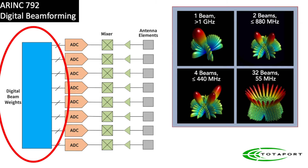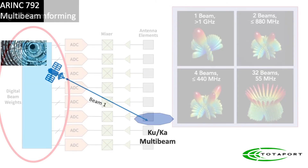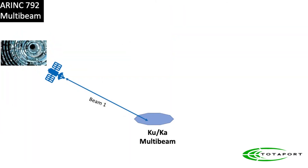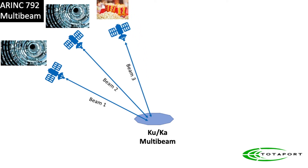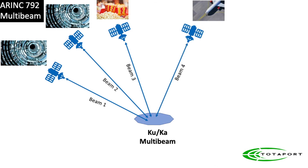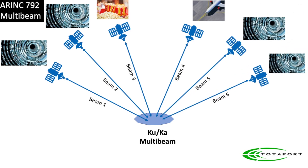Why would we want so many beams? If we had just one beam, it would be pointed at an internet satellite. A second beam could point at a rising satellite for a make-before-break transition. A third could deliver broadcast television. A fourth could point towards a satellite supporting non-passenger services. Another pair of beams could support a different satellite network — that could be as many as six beams.